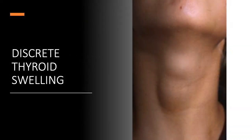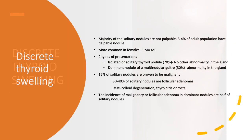The first morphological abnormality of the thyroid gland is a discrete thyroid swelling, also called a nodule. Discrete thyroid swellings are common; most are non-palpable and detected incidentally with imaging of the neck, but about three to four percent of the adult population have palpable nodules. It is more common in females, with a female to male ratio of four to one. There are two kinds of presentations: a true single or solitary nodule, where the rest of the thyroid gland is normal, or a dominant nodule of a multinodular goiter, where the rest of the thyroid gland is also abnormal.